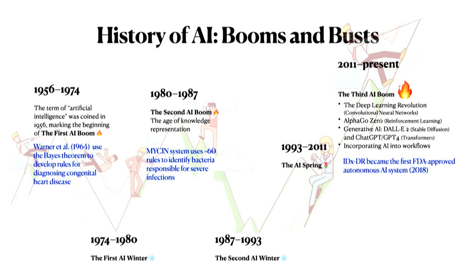Medicine has always been central to AI history — neural networks were inspired by brain science. During the first AI boom, there were medical applications including the use of Bayes' theorem to diagnose congenital heart disease. A famous one from the second AI boom was the expert system MYCIN, which used over 600 rules for identifying bacteria responsible for severe infection. In the current AI boom, the hero is the device IDx-DR, which became the very first FDA-approved autonomous AI system in 2018 — created not by Google, but by Dr. Michael Abramoff, co-author of this tutorial.